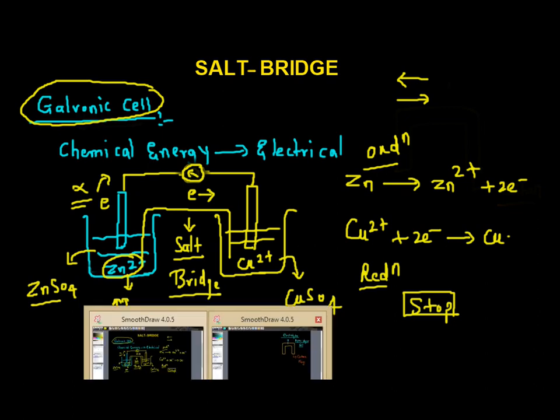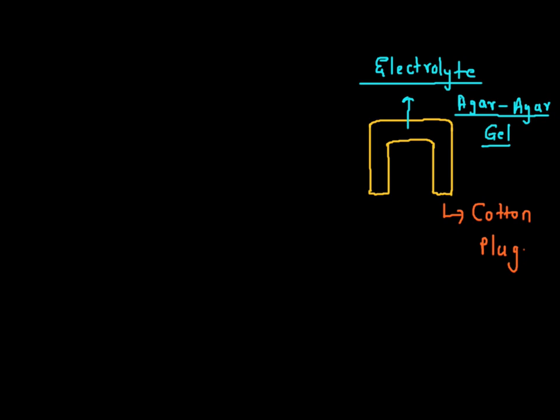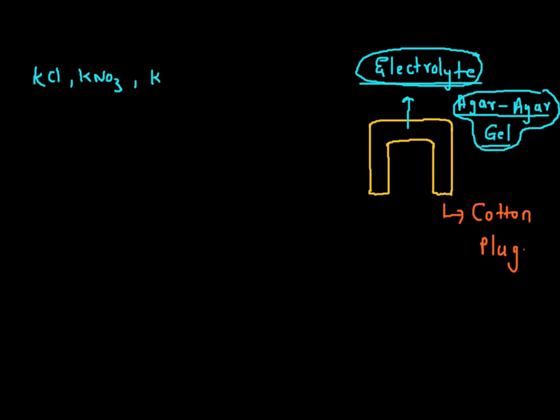So basically we know that the salt bridge is used in a galvanic cell. The salt bridge is a tube having electrolyte filled inside it along with agar-agar gel. After filling and converting into gel form, we plug cotton so the electrolyte does not fall directly into the container. The electrolytes used inside the salt bridge are KCl, KNO3, K2SO4, and ammonium nitrate (NH4NO3).